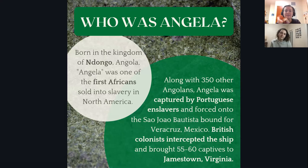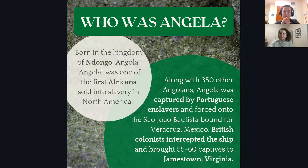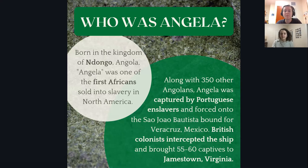We can see here that we learn a little bit more about who Angela was — that she was born in the kingdom of Ndongo, which is in Angola, and she was baptized under the name Angela. We do not know her real name, but that's the name written in records. Along with many others, she was captured by Portuguese enslavers and bound for Veracruz but eventually brought to Jamestown.